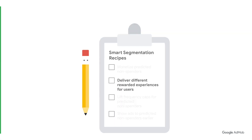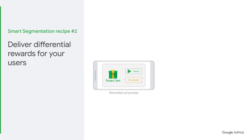The second recipe in smart segmentation is to deliver different rewarded experiences for your users. With smart segmentation, you can do more than choose which users to show ads to. You can also show different types of users different types of ads. We recommend you use these capabilities to offer different rewarded experiences to purchasers and non-purchasers. Let's take a closer look at this together.